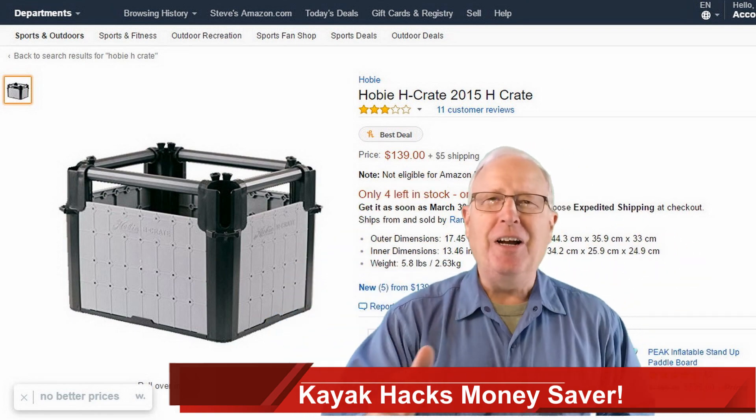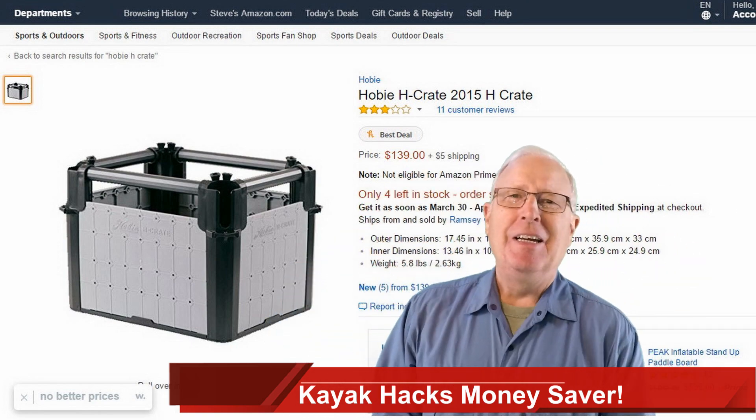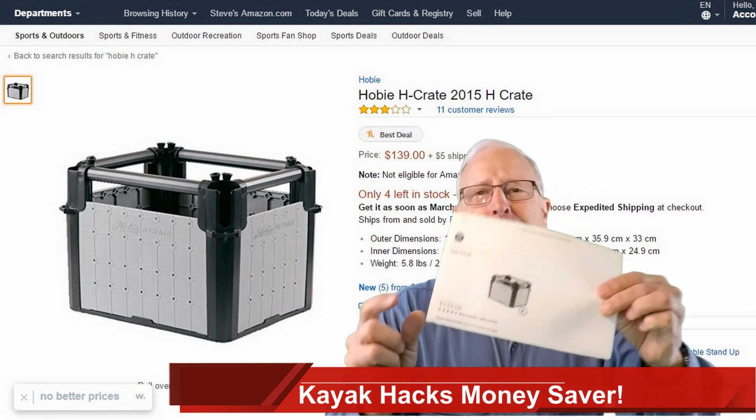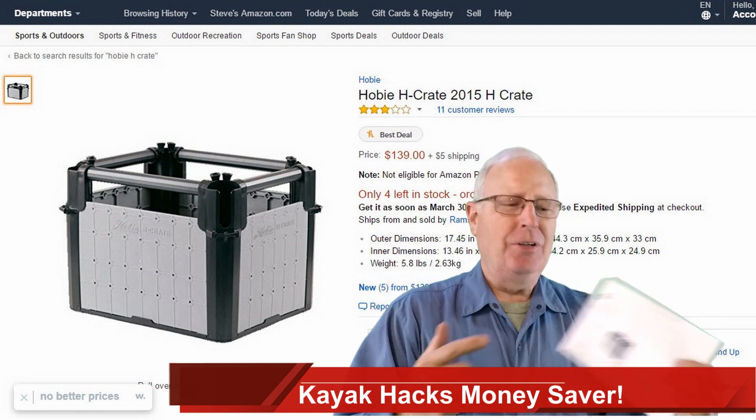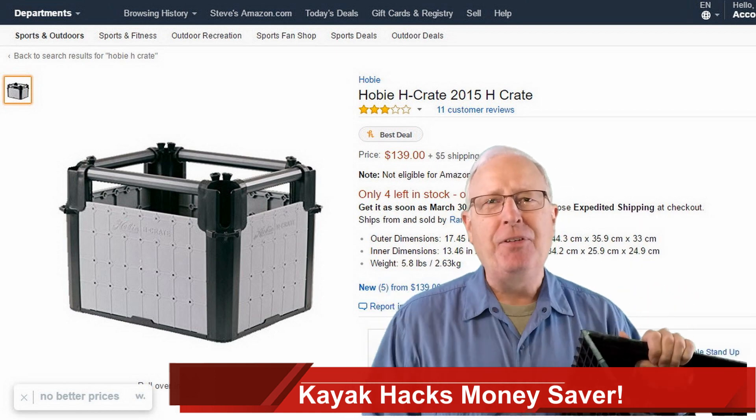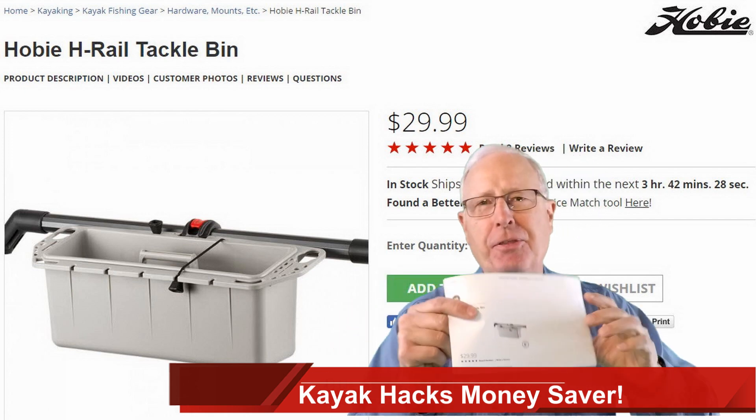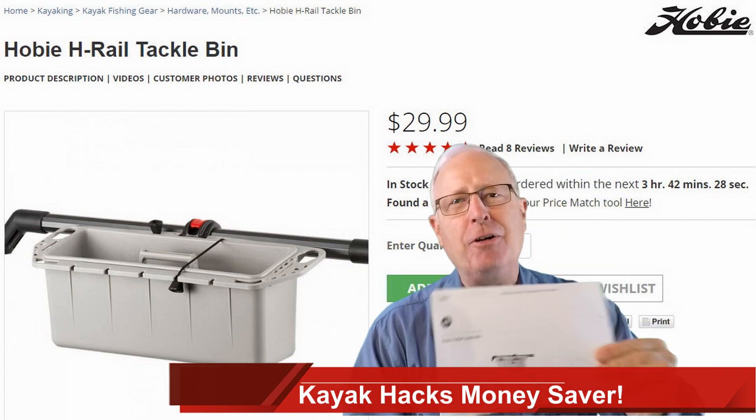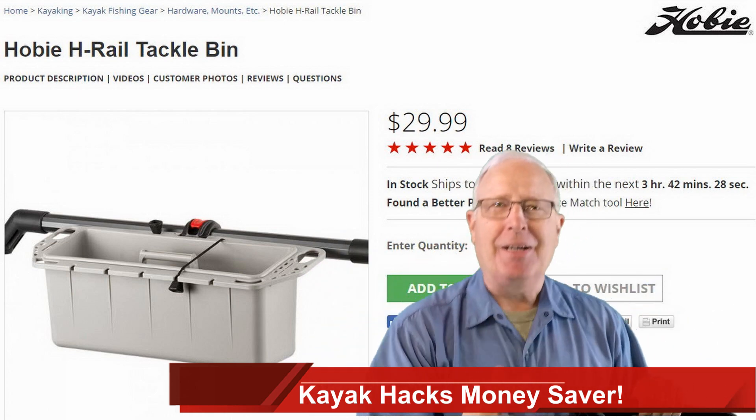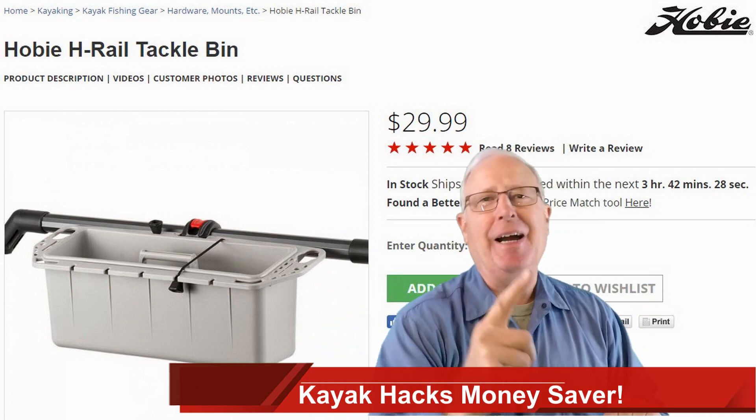Holy mackerel, Hobie stuff is expensive. To get the equivalent of a milk crate, you have to spend $139 on one of their H-crates. And if you want to add stuff to the side, it's another $30 for their tackle bin. I'm going to show you how to do that for a buck this week on Kayak Hacks.